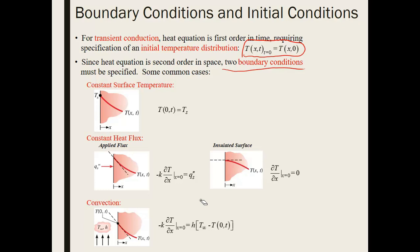At a convection boundary, you equate energy propagating by conduction through the solid to energy convected at the solid-fluid interface. Finally, an insulated boundary condition means no heat flux through that surface, so the temperature profile is flat at that boundary — and by Fourier's law, the spatial derivative of temperature must be zero.